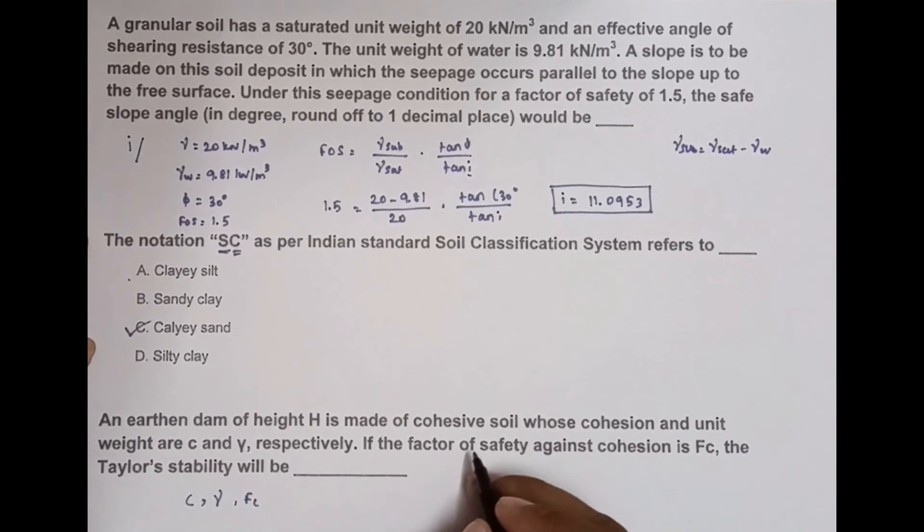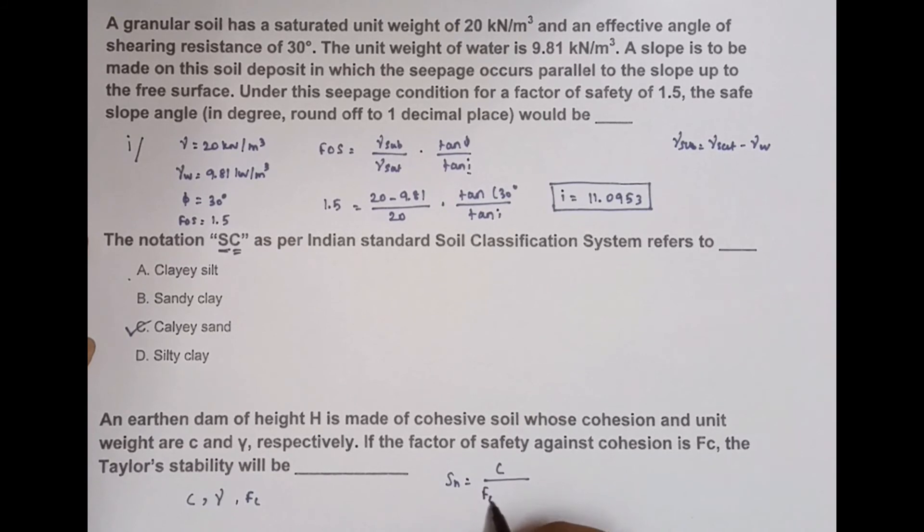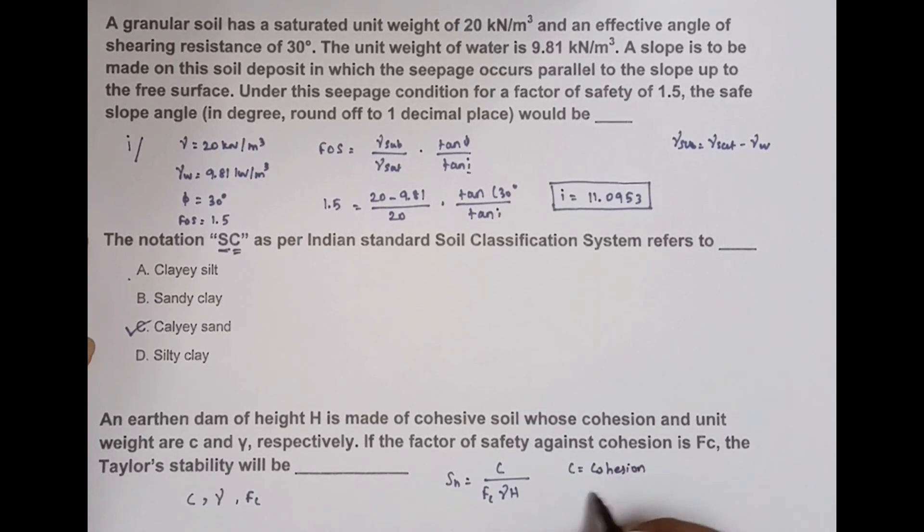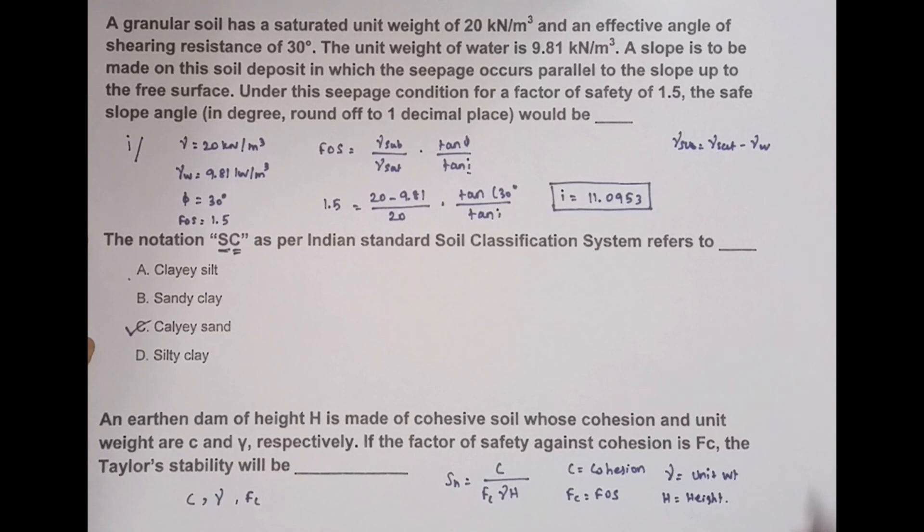We know the formula of Taylor stability number: Sn = c / (Fc × γ × h), where c means cohesion, Fc is factor of safety, γ = unit weight, and h = height of embankment. This is the formula we use for Taylor stability number. Thank you.